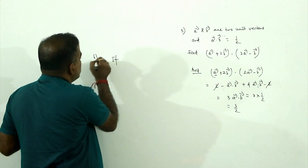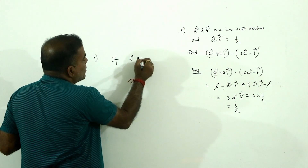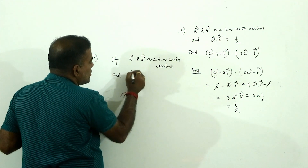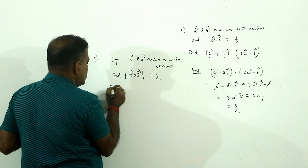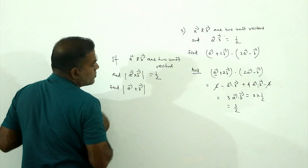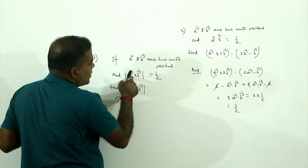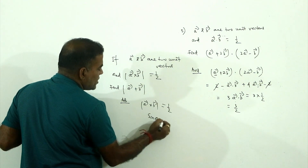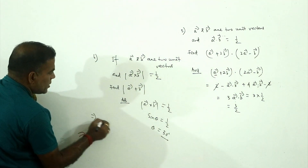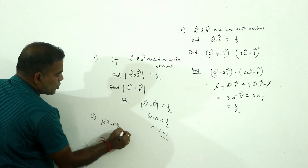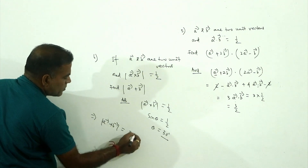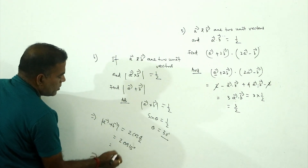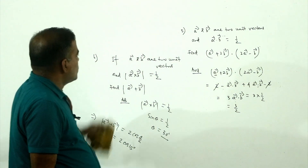Next question: if A and B are two unit vectors and |A cross B| equals 1/2, find |A plus B|. Since |A×B| = sin θ = 1/2, we get θ = 30°. Therefore |A plus B| = 2 cos(θ/2) = 2 cos 15°.